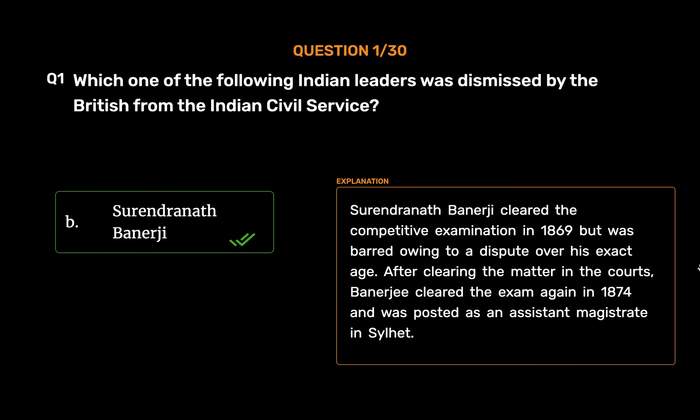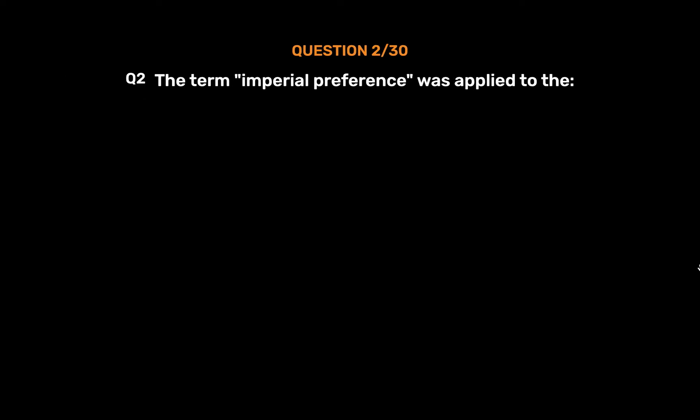Surendranath Banarji cleared the competitive examination in 1869 but was barred owing to a dispute over his exact age. After clearing the matter in the courts, Banarji cleared the exam again in 1874 and was posted as an assistant magistrate in Silhat.